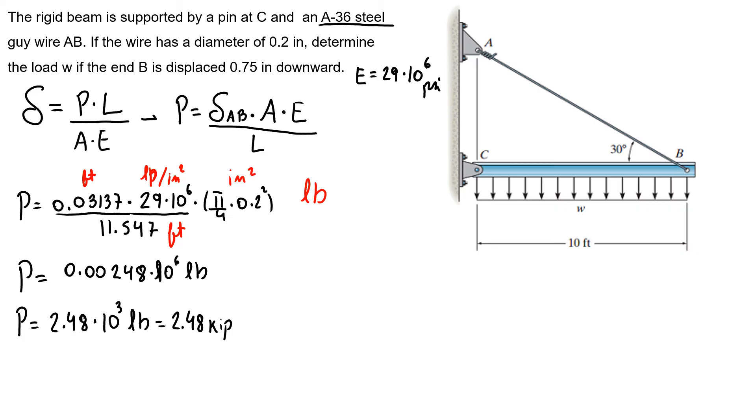Now to end this exercise, I have my relationship because we know that our load P is our tension T, that is 10W. So I know 10W equals 2.48 kip. So I have my load W is 0.248 kip per foot. This is exercise 2 for homework 5.